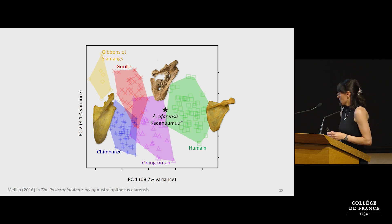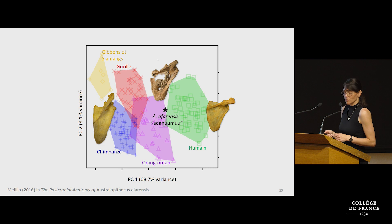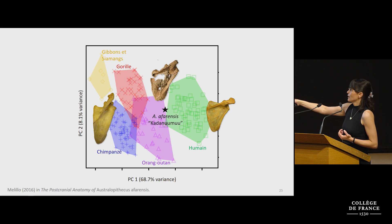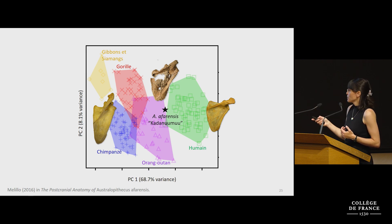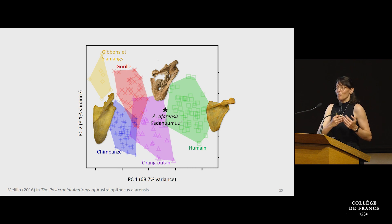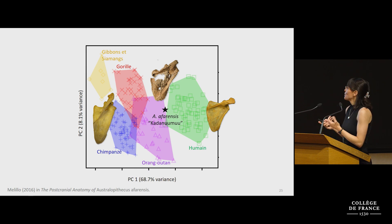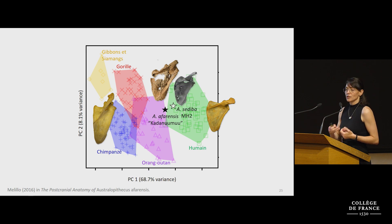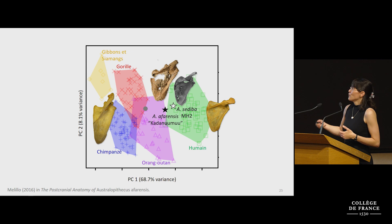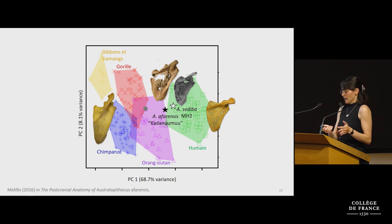A morphospace plot quantifies differences in scapula shape: the horizontal axis separates species by whether they show an oblique spine and glenoid orientation — falling to the left — versus a more transverse morphological pattern — falling to the right. Kadanuumuu falls between humans and orangutans, clearly distinct from either of the African apes, our closest living relatives. Regardless of whether the last common ancestor had an African ape-like or a more generalized great ape pattern, what we see is morphological change over time rather than stasis. Afarensis falls further from humans, while MH2, more than a million years younger, is even more similar to living humans — an evolutionary trajectory of change over time.